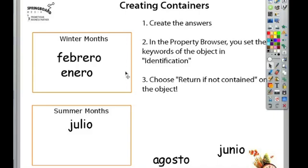Dr. Marzano studied the best ways that people can use interactive whiteboards. And one of the things he suggested was this idea of a reinforcer property — the idea that the student finds out right away if their answer is right or not. He suggests that the teacher spends time describing why or why not the answer is correct, not just relying on the artificial applause to show the student why it's correct.